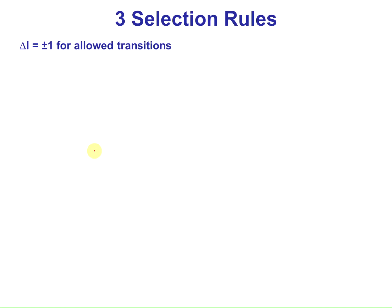Let's look at three selection rules. The first is that a change in L value of plus or minus 1 gives you allowed transitions. D-to-D or S-to-D isn't okay — D-to-D has an L value of 2 going to 2, and S-to-D goes from 0 to 2, skipping the P in between. But S-to-P, P-to-D, or D-to-F — those are all okay.